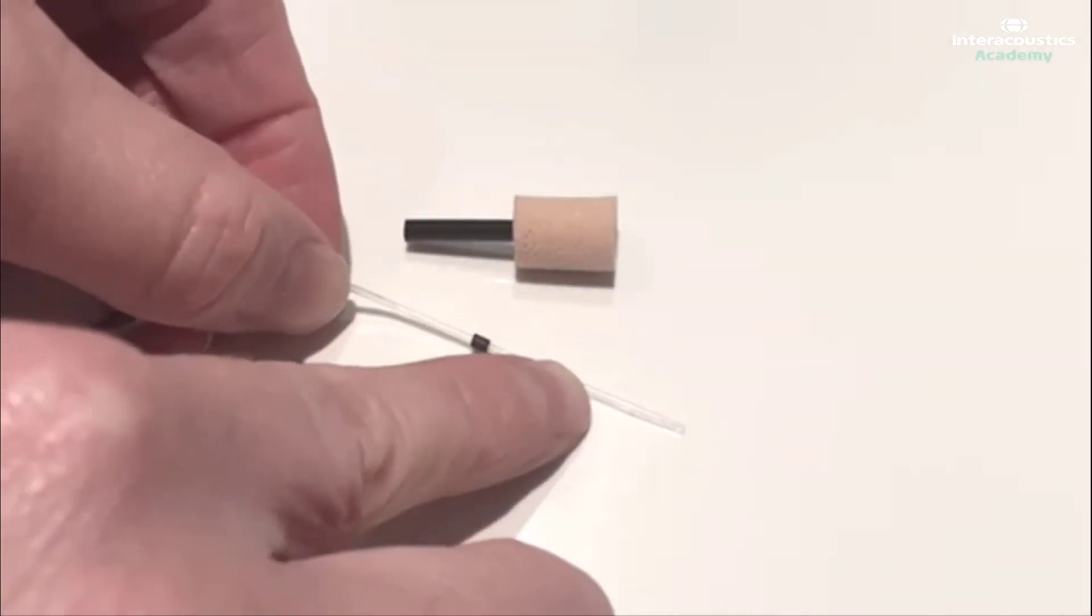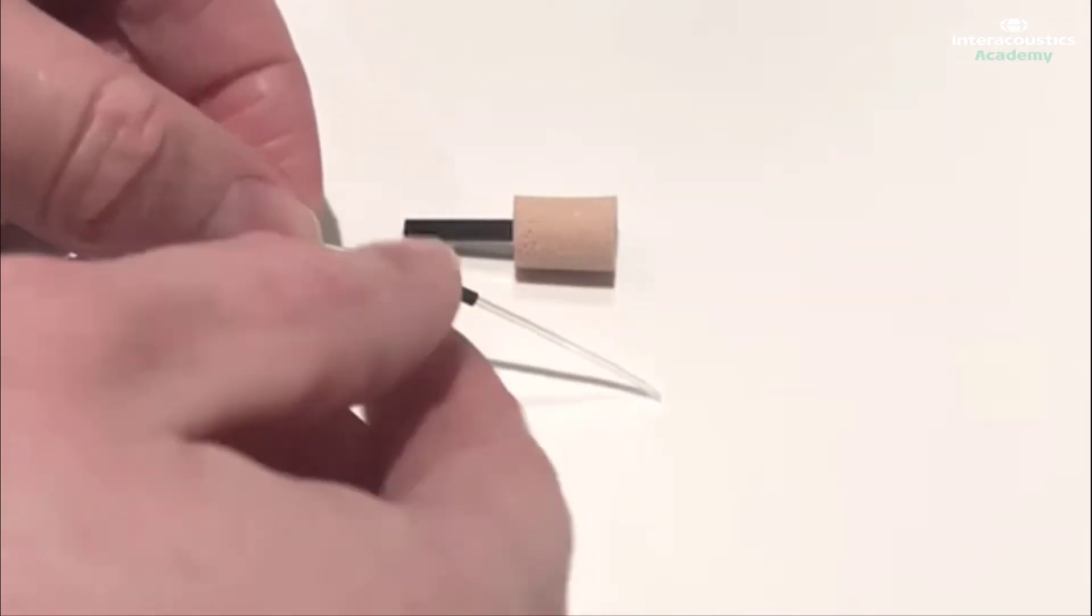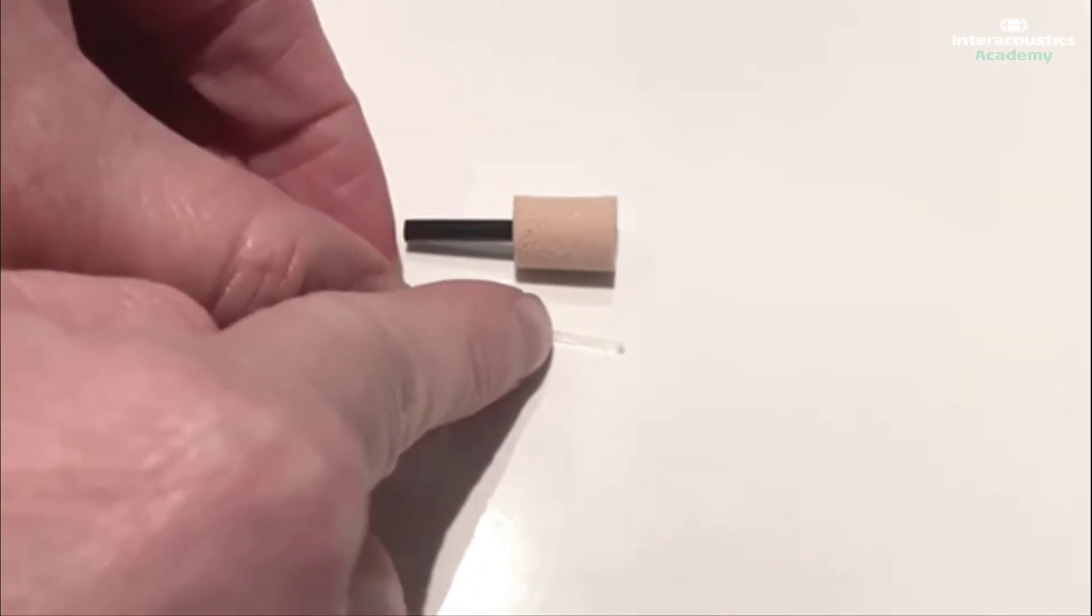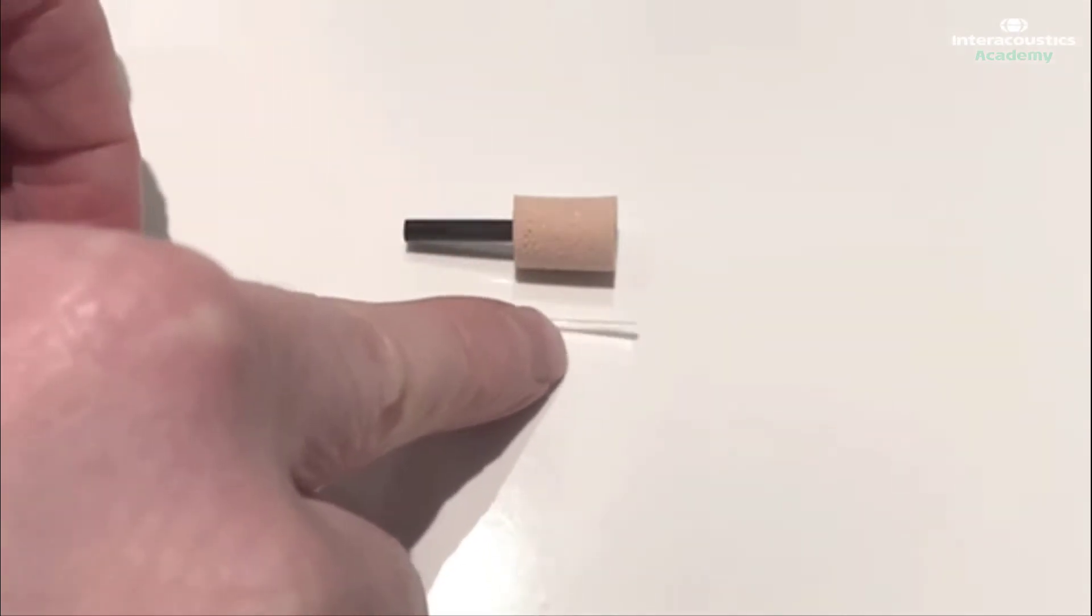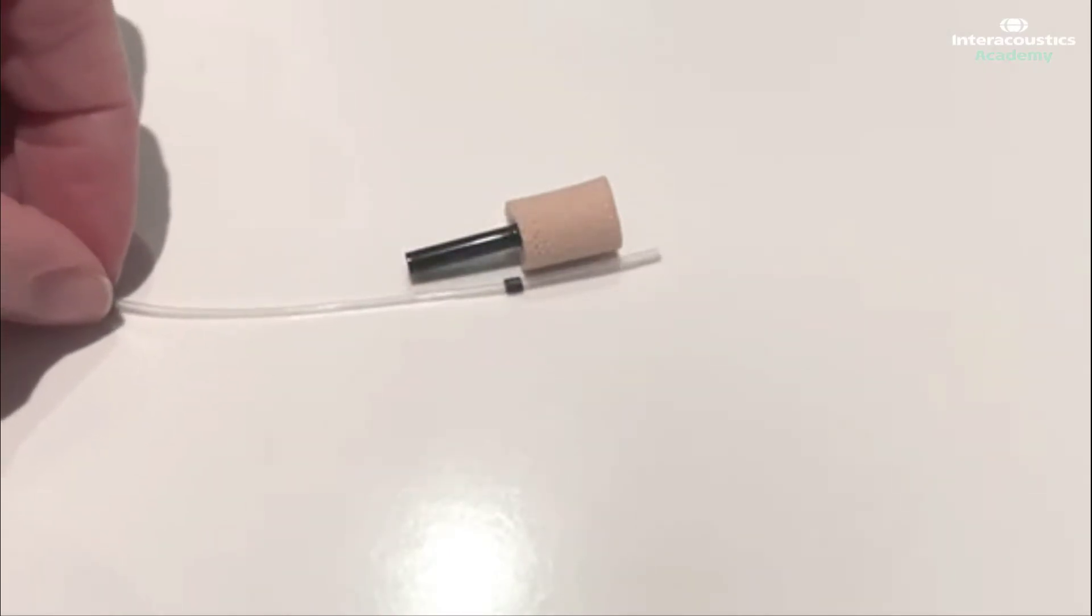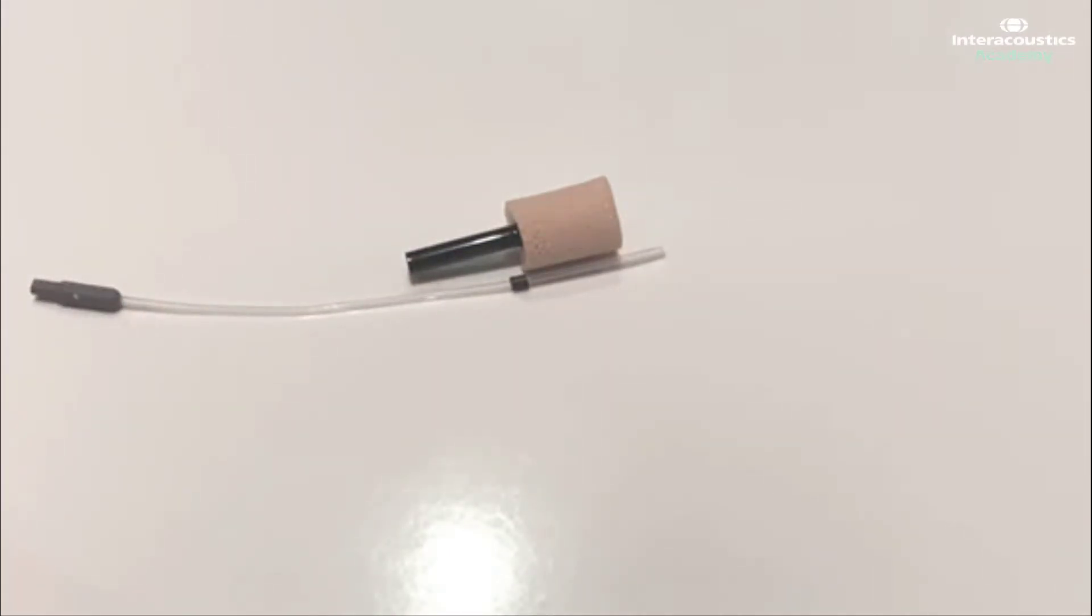However, when using an ear mould or foam tip, you should position the probe microphone alongside a few millimetres beyond the end and move the black marker so that it is in line with the outer edge of the ear mould or foam tip. Once the correct probe microphone length has been established and marked, you are ready to insert the probe microphone into the ear canal.